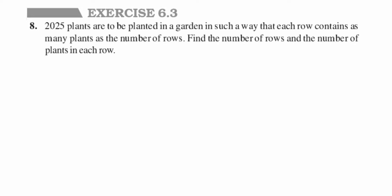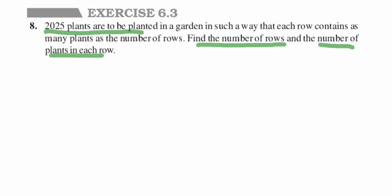Hey everyone, here I'm doing Exercise 6.3, 8th question from squares and square roots of Class 8. The question is: 2025 plants are to be planted in a garden in such a way that each row contains as many plants as the number of rows. Find the number of rows and the number of plants in each row.